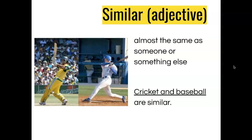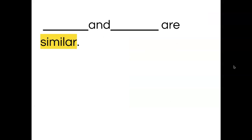'Similar' is a word that means almost the same. For example, cricket and baseball are similar — they're not exactly the same, but they're pretty close. You can think about this when you read: oh, this reminds me of this. This and this are similar because of certain reasons.